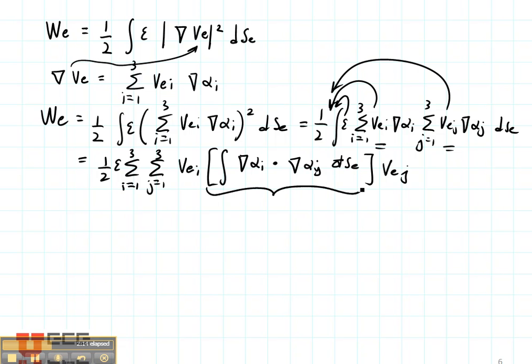This thing right here we're going to call Cij for the element. And that is the elemental coefficient matrix. Sometimes it's also called the elemental coupling matrix because the coupling between each of the nodes is modeled by this elemental coupling matrix.